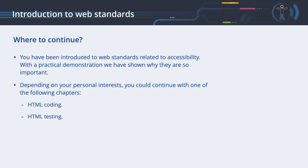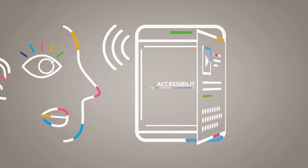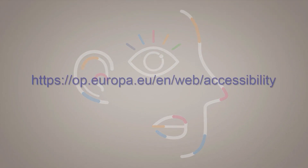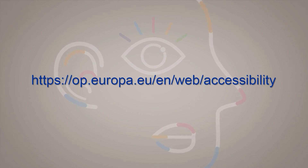Where to continue. You have been introduced to web standards related to accessibility. With a practical demonstration, we have shown why they are so important. Depending on your personal interests, you could continue with one of the following chapters: HTML coding, HTML testing. For more information, visit op.europa.eu/en/web/accessibility.